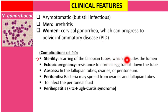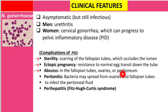The scarring occludes the lumen of the fallopian tube. A second complication is ectopic pregnancy, due to resistance to normal egg transit down the tube because of the scarring. Another complication is formation of abscesses in the fallopian tubes, ovaries, or peritoneum, as well as peritonitis — inflammation of the peritoneum — as bacteria spread from the ovaries and fallopian tubes.